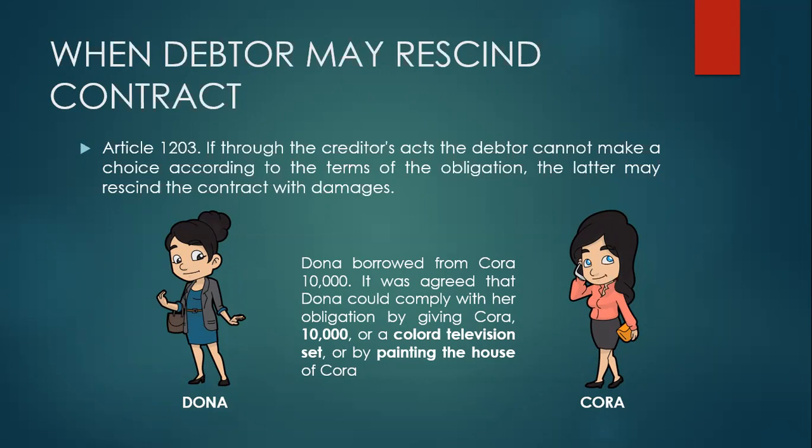For example, Donna borrowed from Cora 10,000. It was agreed that Donna could comply with her obligation by giving Cora 10,000, a colored television set, or by painting the house of Cora. Donna could deliver the 10,000, or the colored television set, or she could paint the house of Cora — it depends upon her choice. But if through the fault of Cora one item is destroyed, then Donna can rescind the contract if she wants. For example, through the fault of Cora, the colored television set was destroyed. In this case, Donna has the right to rescind the contract.